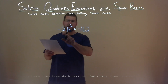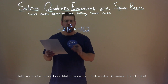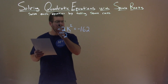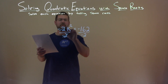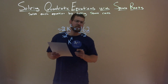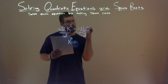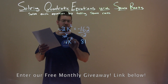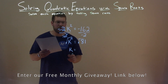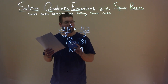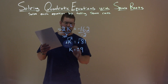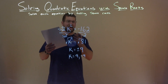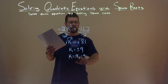We're given this problem: negative 2k squared equals negative 162, and we want to solve this equation by taking square roots. First, I divide both sides by negative 2. That eliminates the negative 2, giving me k squared by itself on the left. On the right, negative 162 divided by negative 2 — negative divided by negative is positive — gives us 81. Now we have k squared equals 81. Taking the square root of both sides eliminates the squared, leaving k by itself. The square root of 81 is 9, but taking the square root over the equal sign means plus and minus. So k equals a positive 9 and a negative 9. Our final answer is k equals positive 9 and negative 9.